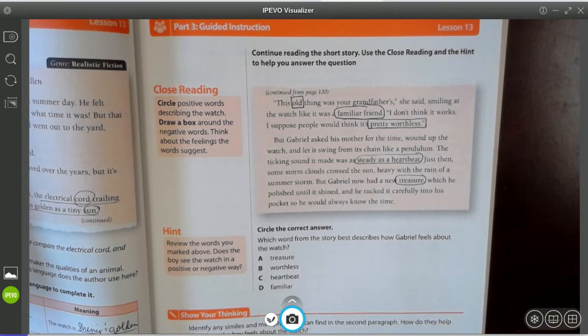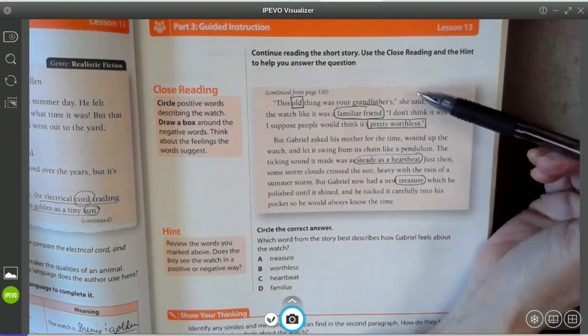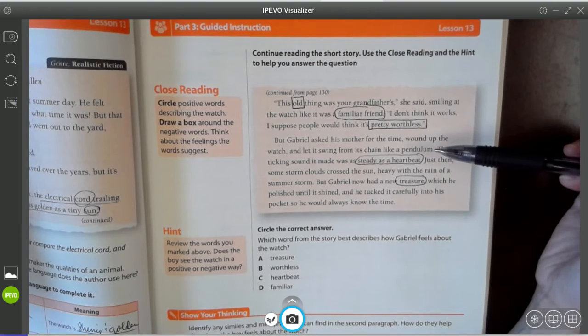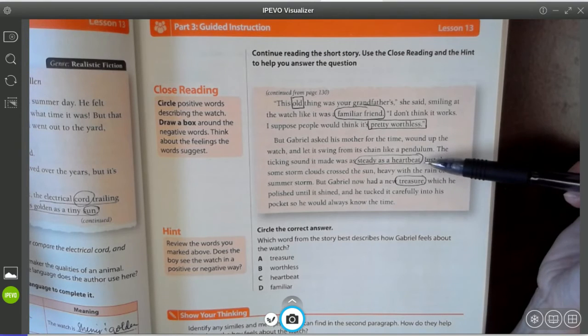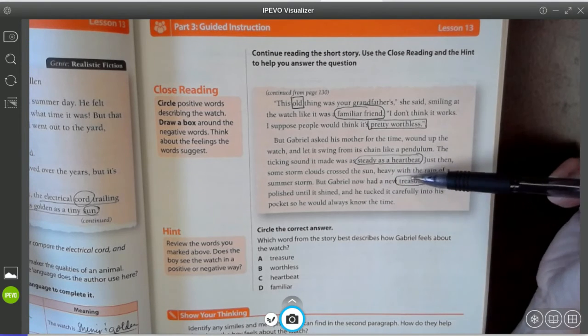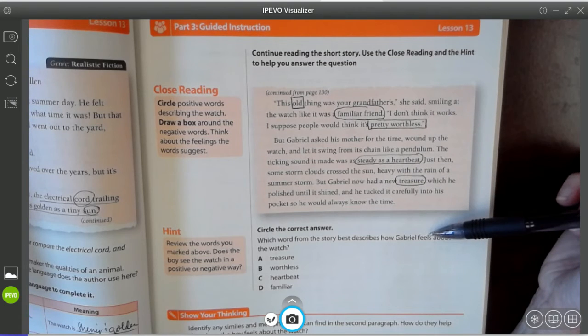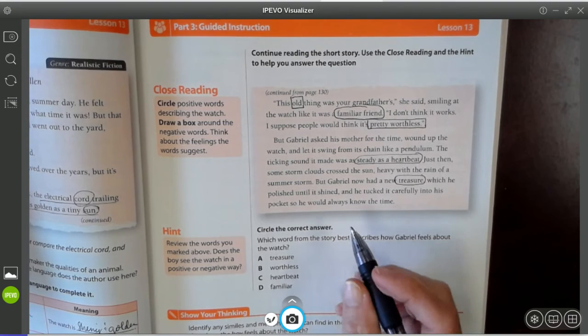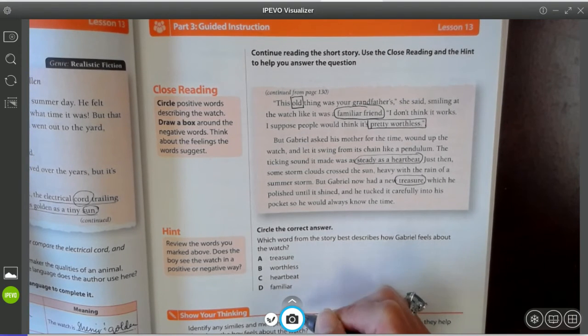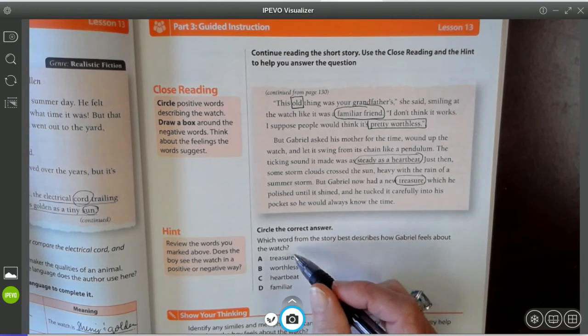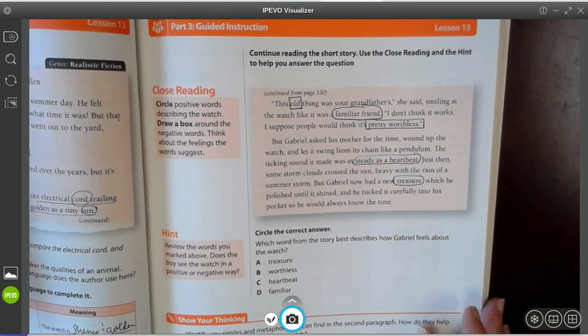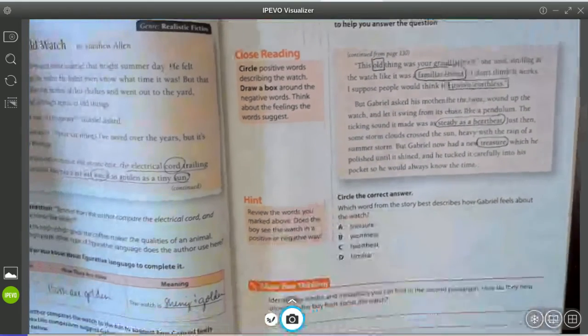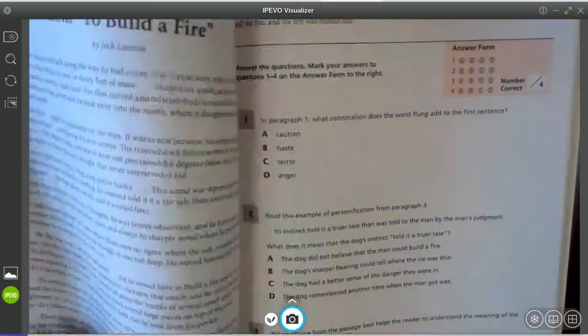All right. So let's review these words that we marked above. And does the boy see the watch in a positive or negative way? All right. So she says this old thing. It could be like a familiar friend, but she says it's worthless. But this is what the boy says. That the ticking sound it was making was steady as a heartbeat. And now he had a new treasure. So which word from the story best describes how Gabriel feels about the watch? Does he feel like it's a treasure, that it's worthless, it's heartbeat, or it's familiar? I'm going to go with the word treasure since it says he has found a new treasure. That one's almost too easy, right?